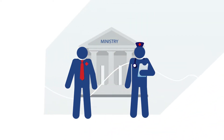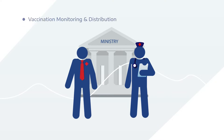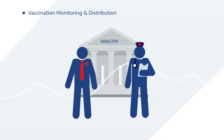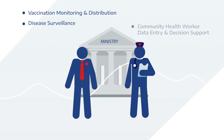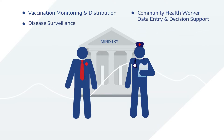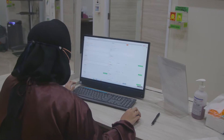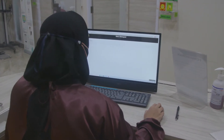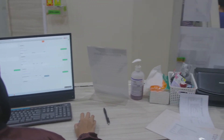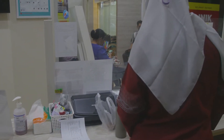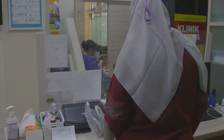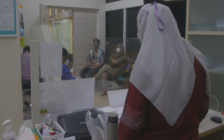Ministries of Health have turned to RapidPro as a flexible and scalable tool for health emergencies, vaccination monitoring and distribution, disease surveillance, community health worker data entry and decision support, and national supply chain monitoring. RapidPro can be used as a software as a service, or it can be built and deployed using the open-source code in cases where data sovereignty may be a concern.